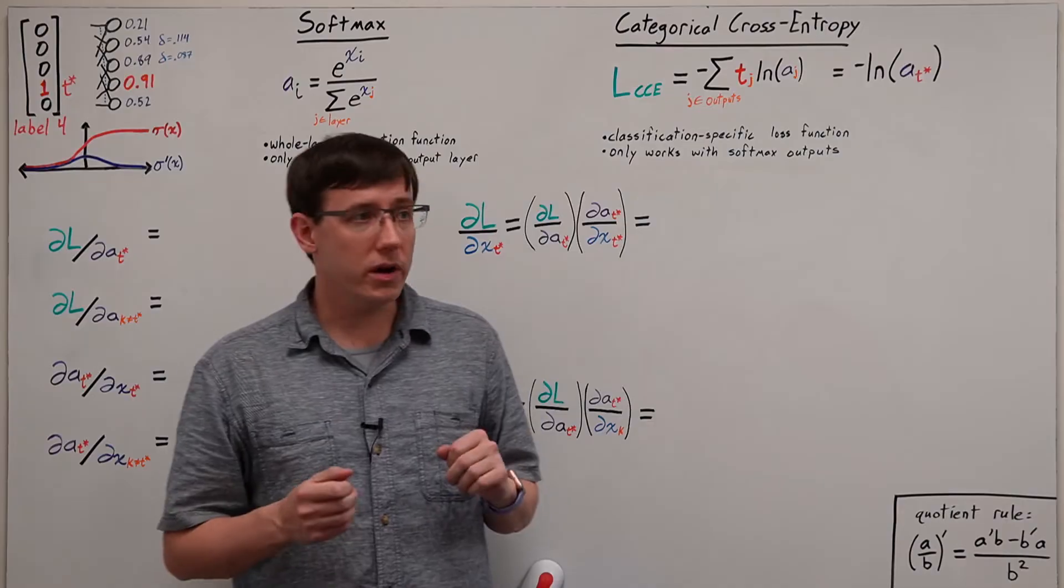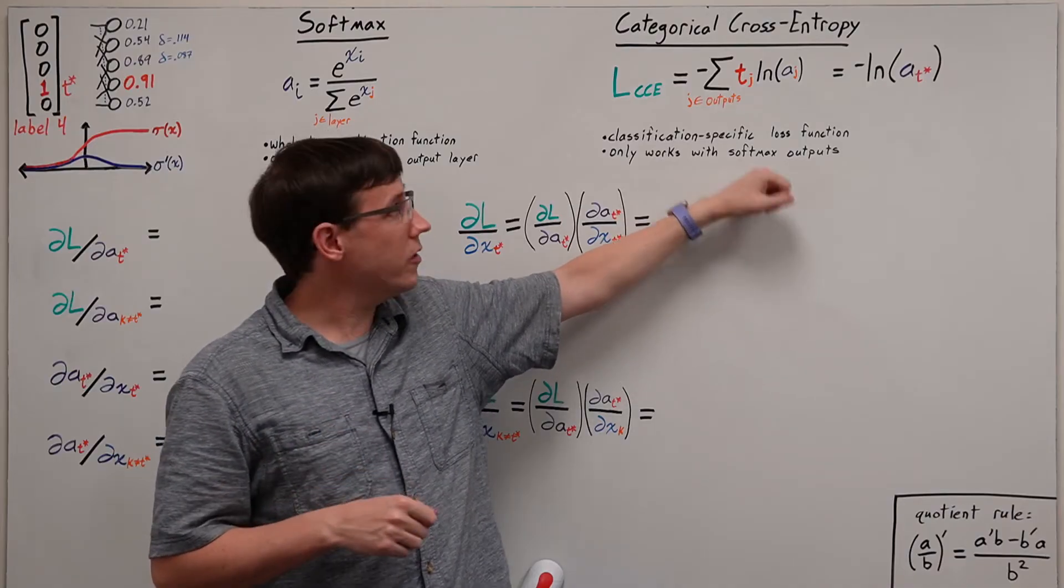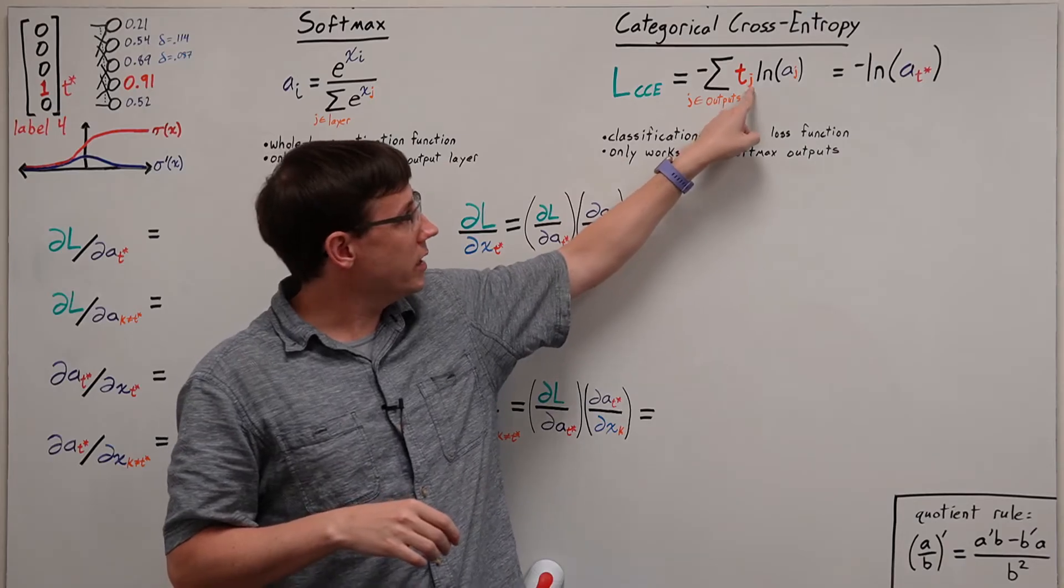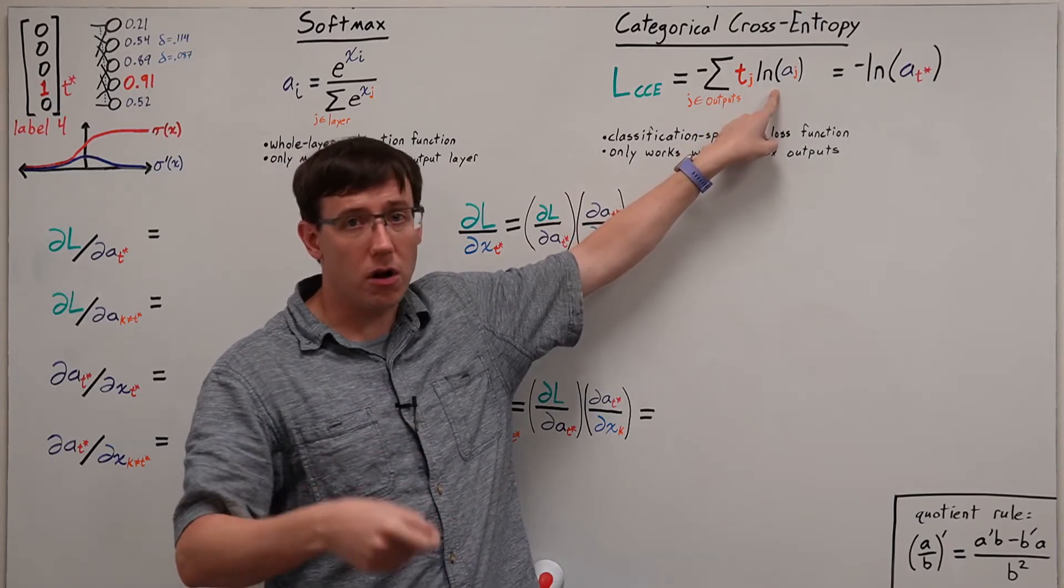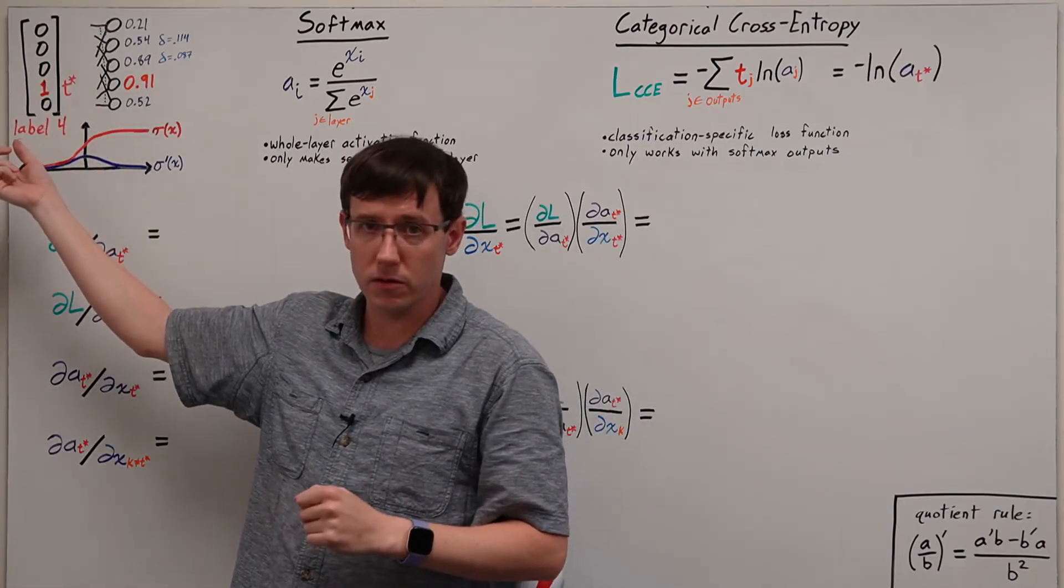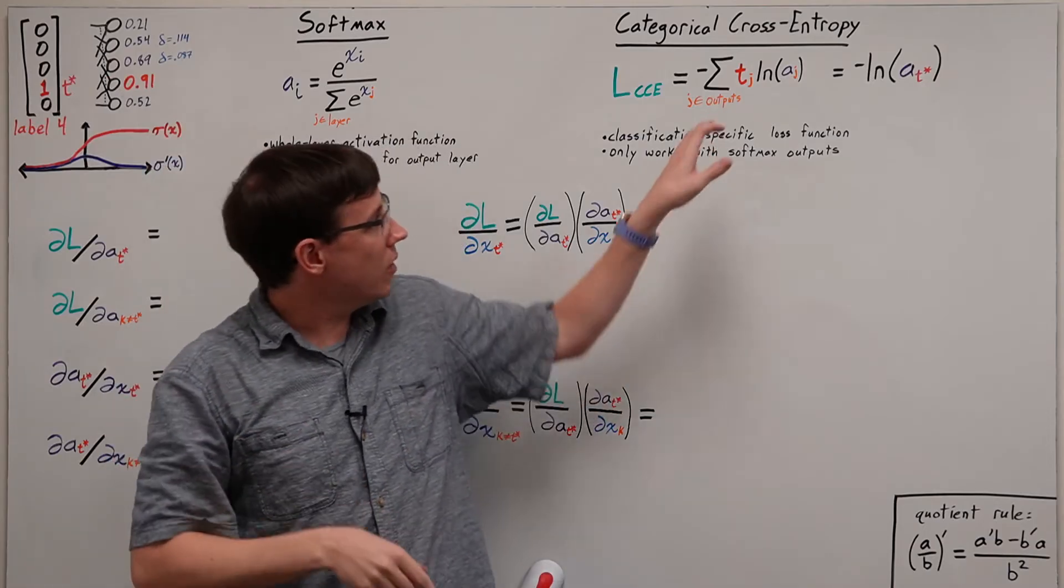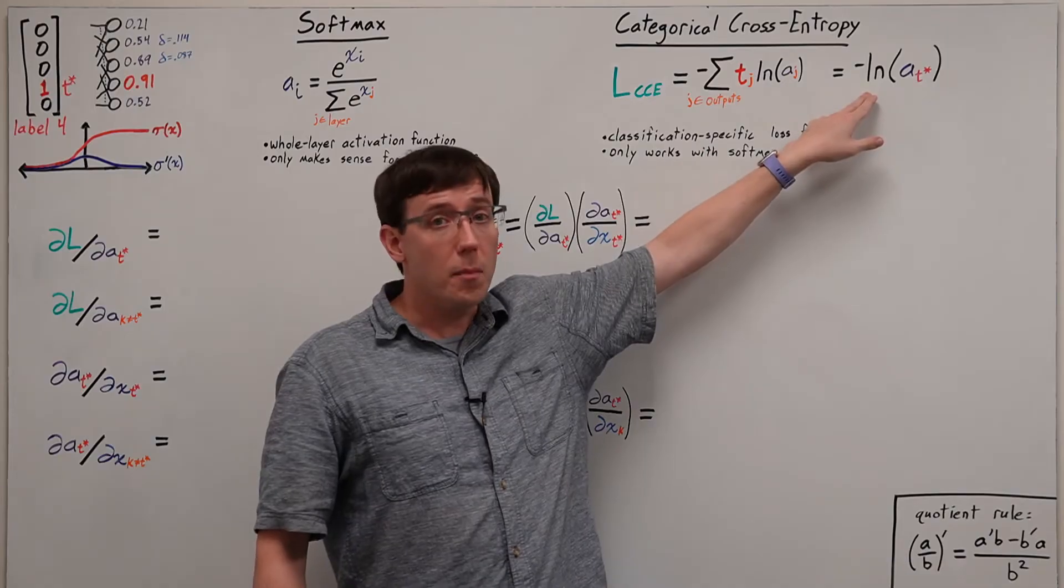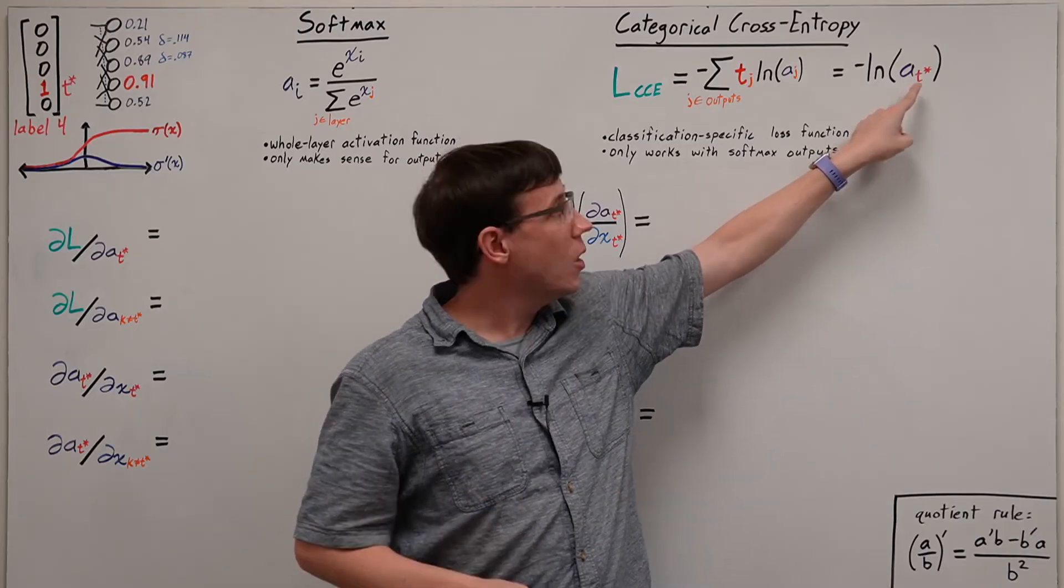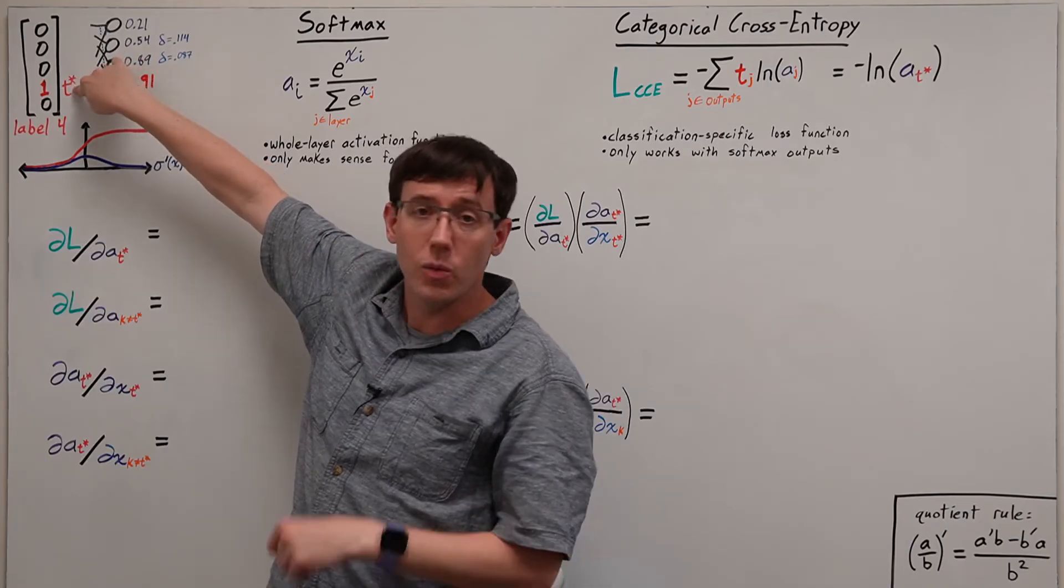But to make use of softmax activations, we want to combine it with a loss function that gives us effective gradient descent updates. And the best candidate for that turns out to be categorical cross-entropy. We define cross-entropy loss as minus the sum over the outputs of the target for that neuron times the natural log of its activation. But if we think for a moment about what this computes, if we're using one-hot vectors for our targets, most of the dimensions will be zero, except for a one on the correct label. And so, most of the terms in this sum will be zero, and it reduces to minus the log of the activation on the neuron that should have an output of one. We can call that neuron where we want the output to be one, T star. It's the one that we are actually targeting with our one-hot vector.